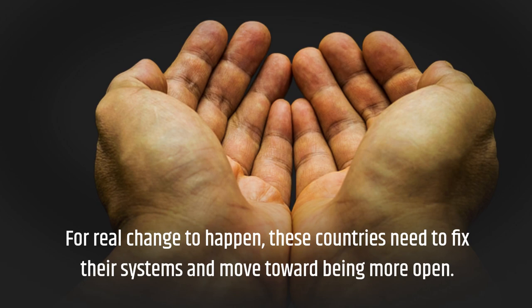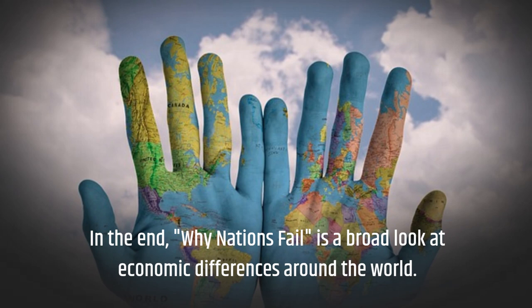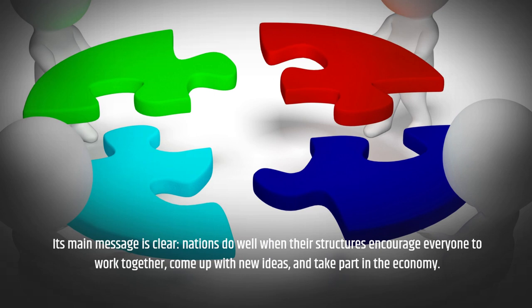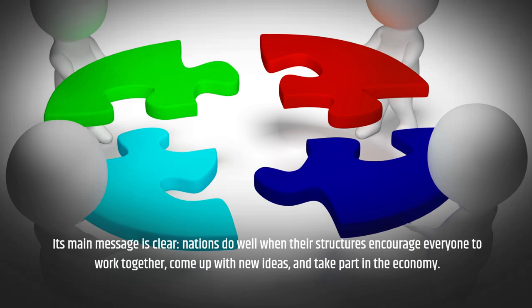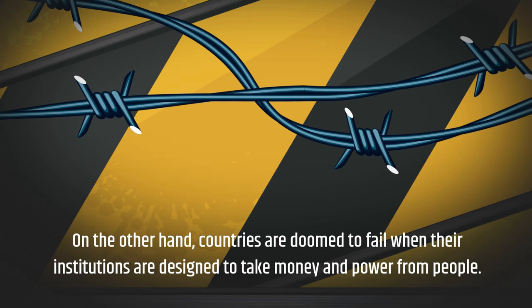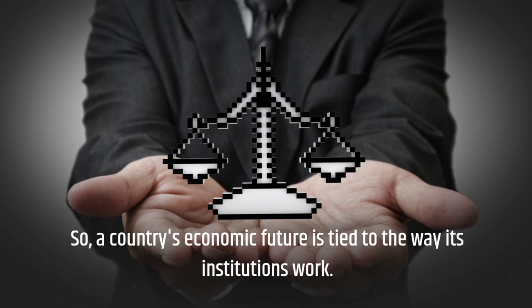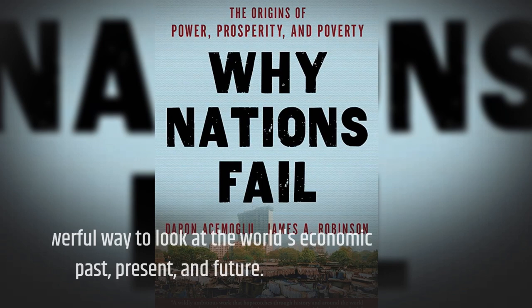In the end, Why Nations Fail is a broad look at economic differences around the world. Its main message is clear: nations do well when their structures encourage everyone to work together, come up with new ideas, and take part in the economy. On the other hand, countries are doomed to fail when their institutions are designed to take money and power from people. A country's economic future is tied to the way its institutions work — this is a powerful way to look at the world's economic past, present, and future.